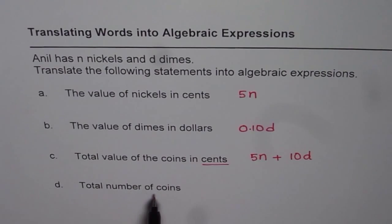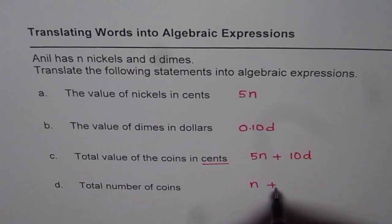Part D is total number of coins. Total number of coins is n plus d. The number of nickels plus the number of dimes.